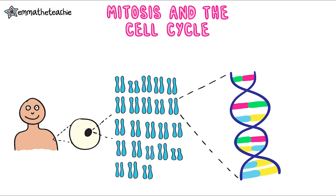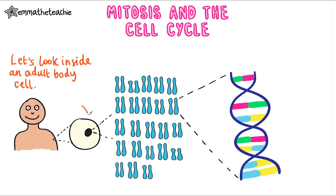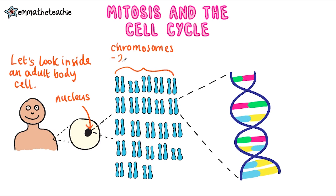To understand the process of mitosis we first need to understand the nucleus a little bit better. So let's look inside an adult body cell. The nucleus is this little black blob and if we zoom inside it we can see it's made up of these structures called chromosomes. There are 23 pairs of chromosomes in an adult body cell, or 46 in total.